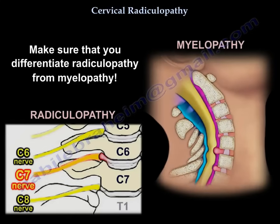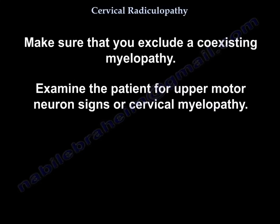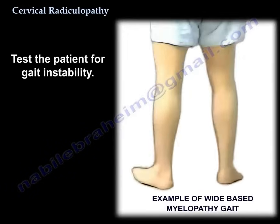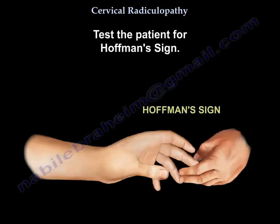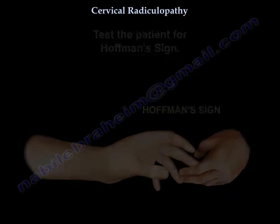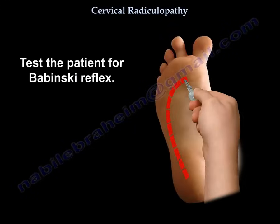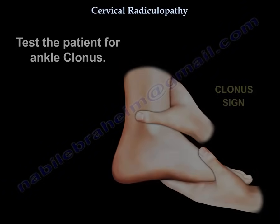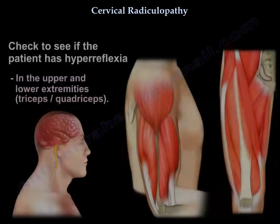Make sure you differentiate radiculopathy from myelopathy, and exclude coexisting myelopathy by examining for upper motor neuron signs. Assess the patient for gait instability, Hoffman's sign, Babinski sign, and clonus. Also check for hyperreflexia.